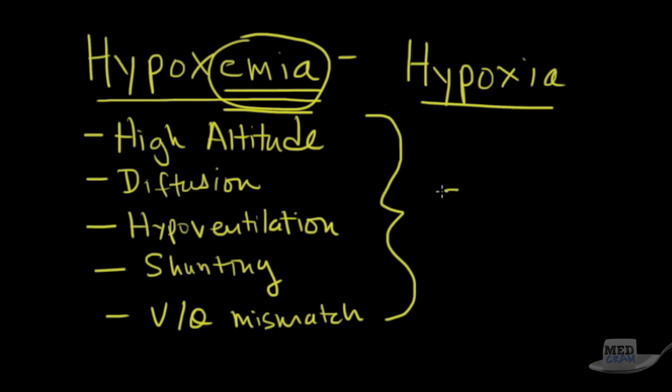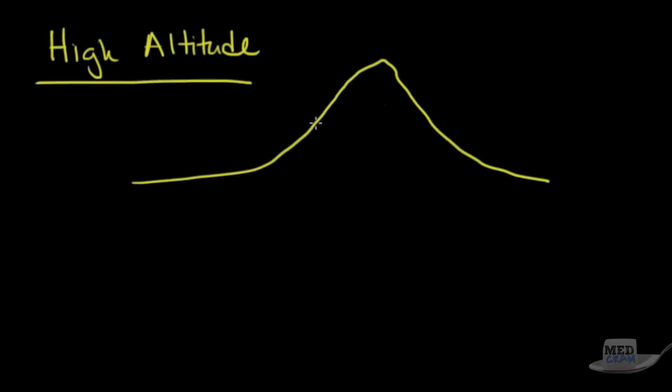So these are the five different reasons for low oxygen in the blood. Let's go over those now. We're going to talk about high altitude. This is exactly as it sounds. As you go up a mountain, the amount of oxygen in your blood at the top of that mountain is less than at the bottom of that mountain.